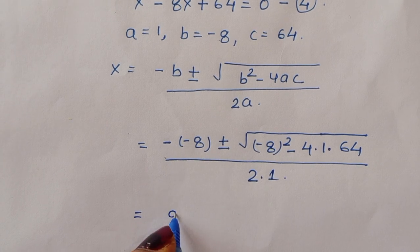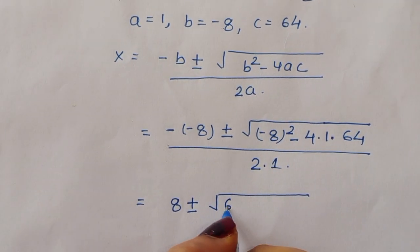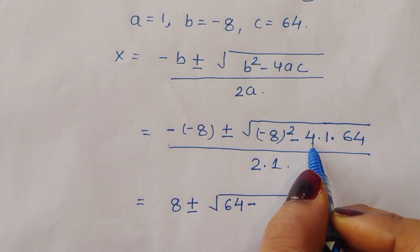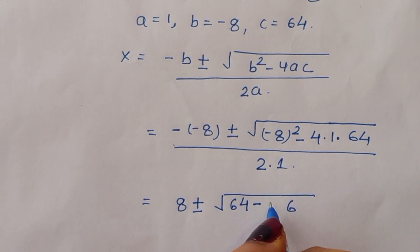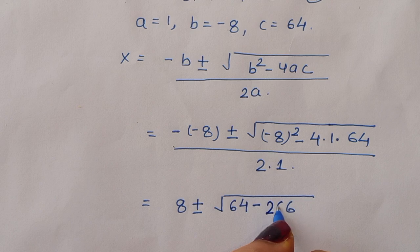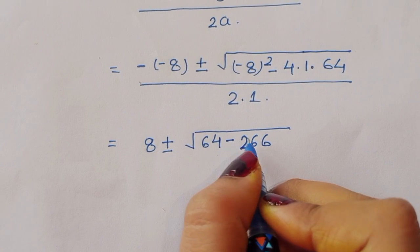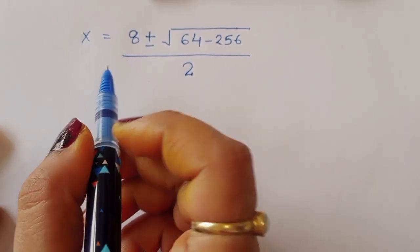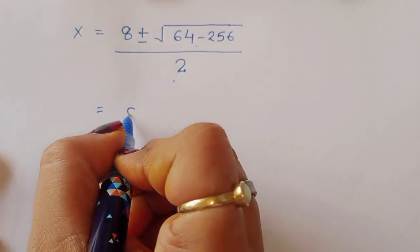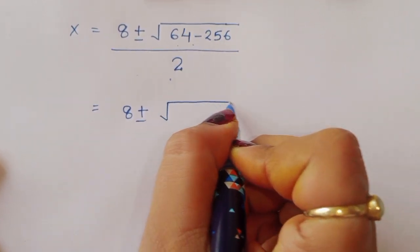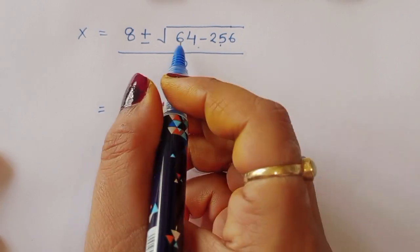This simplifies to: x is equal to 8 plus or minus the square root of 64 minus 256, all divided by 2. Now 4 times 64 is 256, so we have 64 minus 256 under the square root. That gives x equals 8 plus or minus the square root of minus 192, divided by 2.